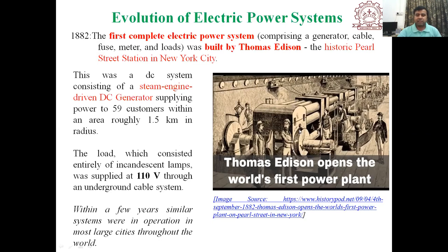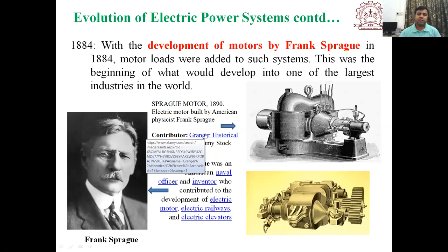Seeing Thomas Edison's power plant, many similar systems were developed in operation throughout the world. The year 1882 is a main milestone — Thomas Alva Edison demonstrated the way of distributing power in the US. In 1884, with the development of the motor by Frank Sprague, he developed a DC motor.